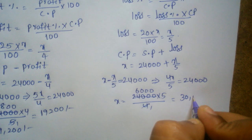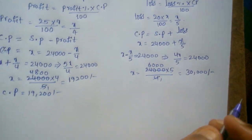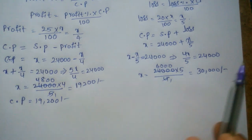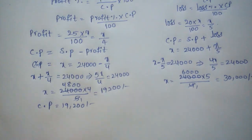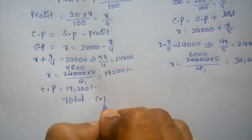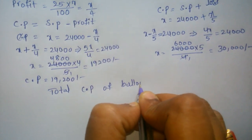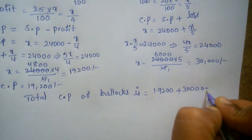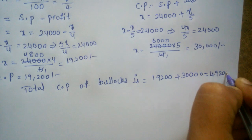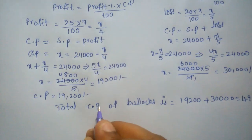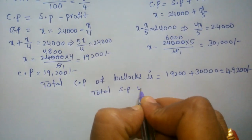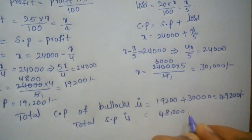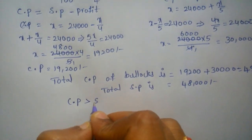Now we know both cost prices: one bullock cost price is 19,200 and the other is 30,000. Total CP of both bullocks is 19,200 plus 30,000 equals 49,200. Total SP is 24,000 plus 24,000 equals 48,000. Since CP is greater than SP, the farmer made a loss.